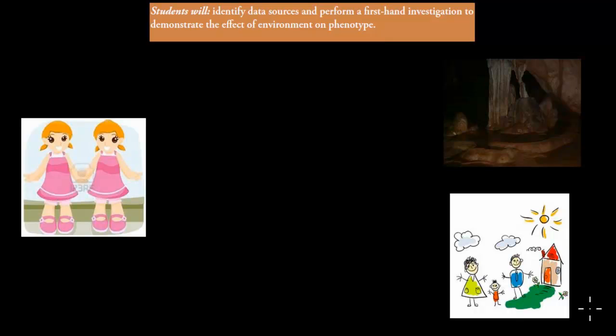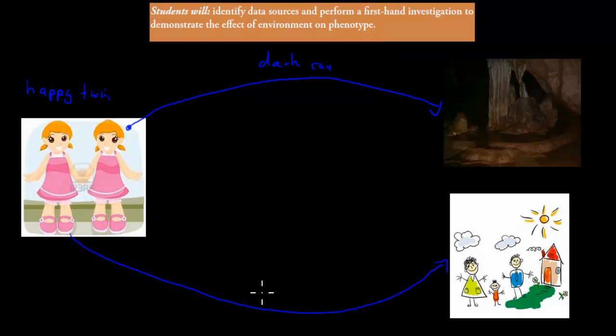If you wanted to test the effect that the environment has on genes, you could grab a pair of twins, these are happy twins, and you could take one of them and put this one in a dark cave and leave her there for a couple of months, maybe a couple of years. Then take the other twin and put her into a happy family where everything is perfect.